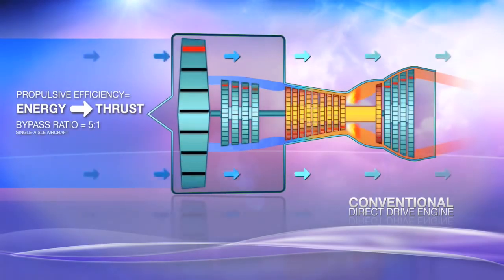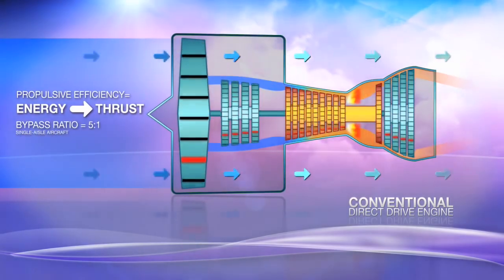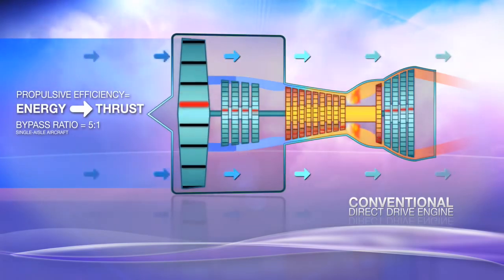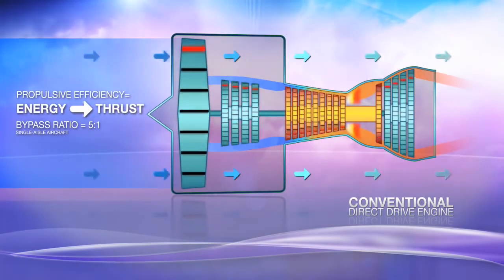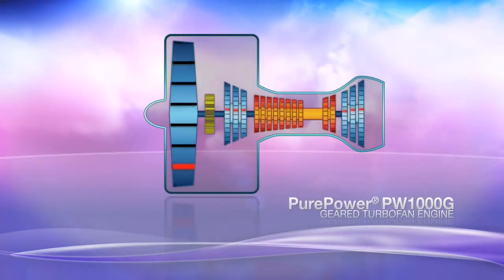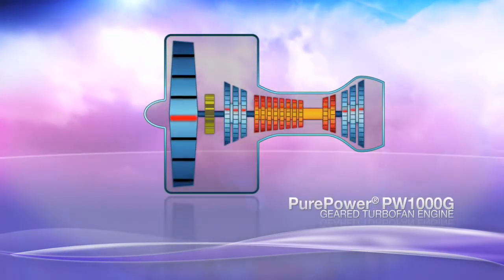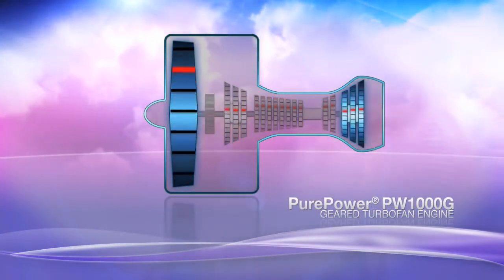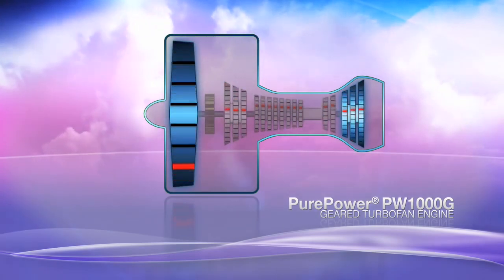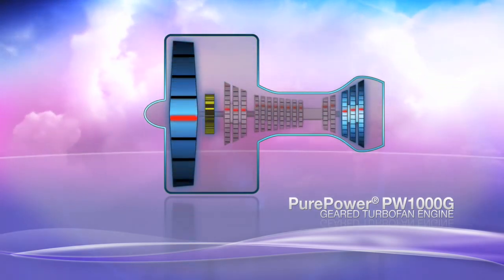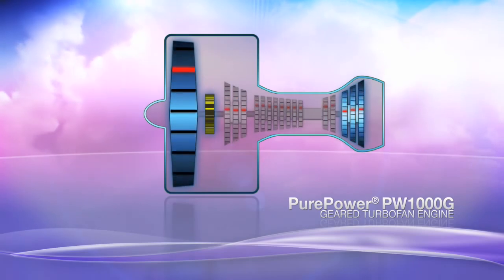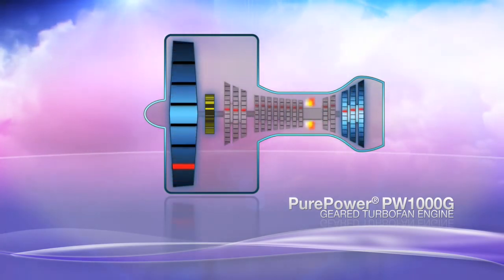The higher the bypass ratio, the better. While a conventional engine runs its fan and turbines at the same speed on a direct drive shaft, the PW1000G engine varies the speeds of the fan and turbines with a highly efficient gearbox, a simple idea that allows these modules to operate at optimal speed and efficiency.